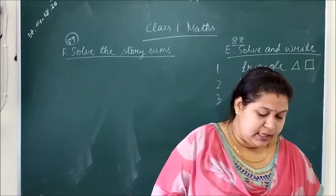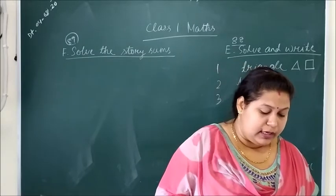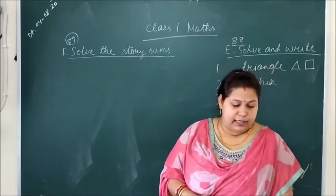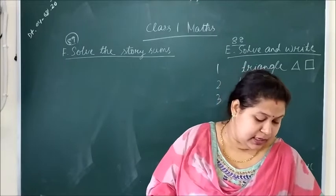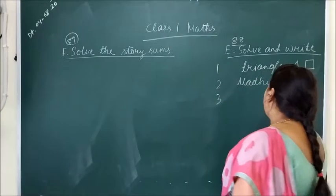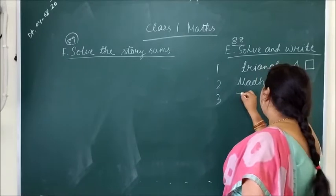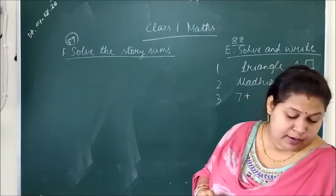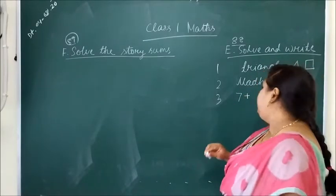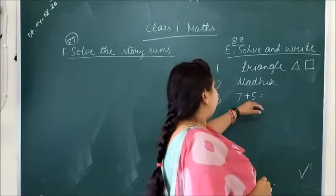Question number 3. There are 7 pink flowers and 5 white flowers. How many are there in all? So you can see that in the park there are so many flowers. Some of the flowers are white and some of them are pink. So in the question, how many pink flowers? 7 pink flowers and 5 white flowers.